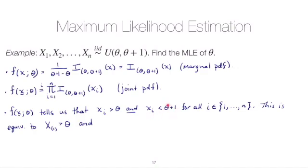And also, if we look at this inequality, if every one of the xi's is less than theta plus one, then that means the max must be less than theta plus one. So the max less than theta plus one. And combining these together, we'll see that theta will be between the max minus one and the minimum.